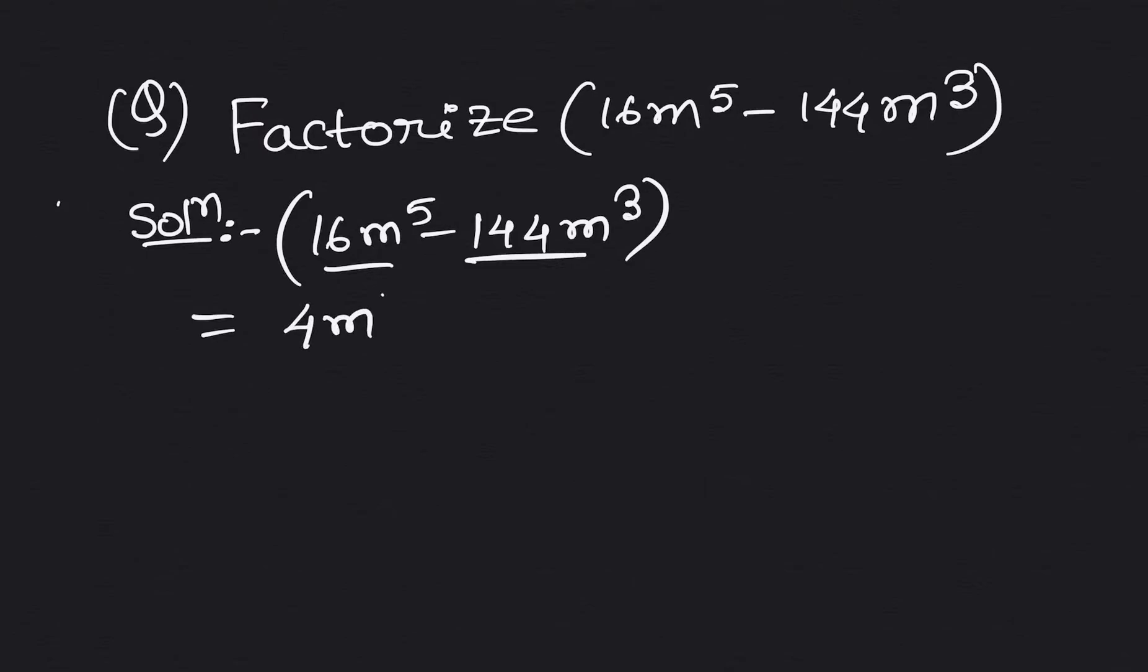And the first portion, the rest of the portion will be here 4 into m square. Minus the second portion, the second term, the rest of the portion will be here 36.